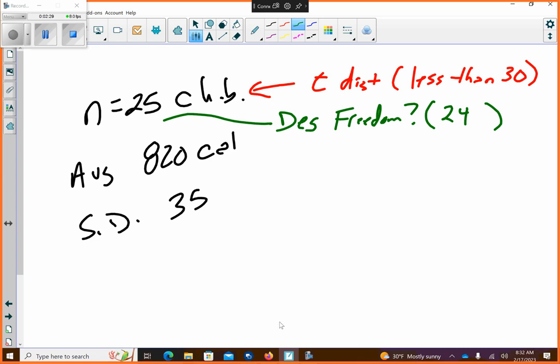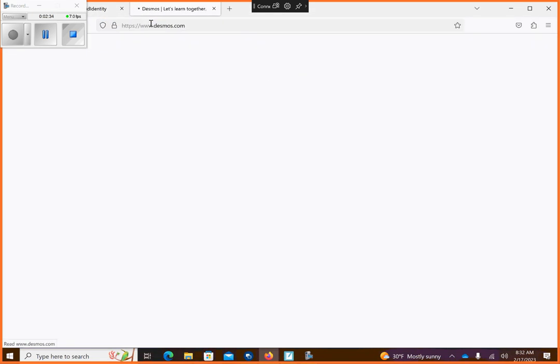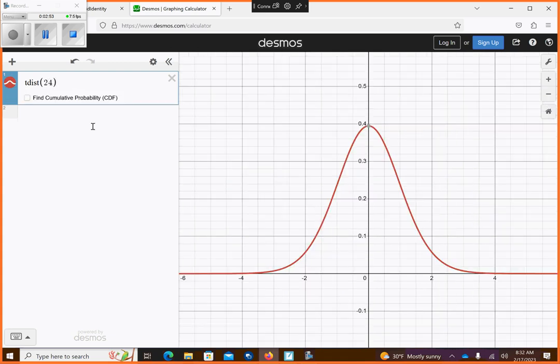Alright, so let's join our decimals family. Decimals. And you can just type in T distribution or T dist. And then it's going to say enter degrees of freedom. And we said it was going to be 24, right? So that is my T distribution. Yes, it looks like a normal distribution. But that's what the T distribution does. It approaches a normal distribution.